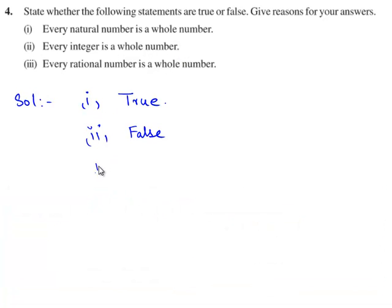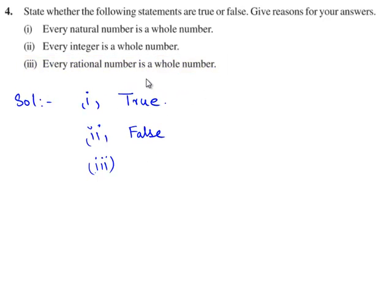Now we shall consider the third statement. The statement given is: every rational number is a whole number. This statement is false because the set of rational numbers contains all positive, negative, and fractional numbers. But the set of whole numbers contains only positive numbers. Therefore, every rational number is not a whole number.